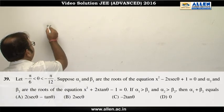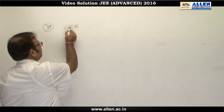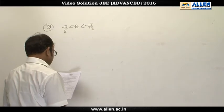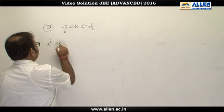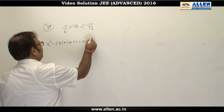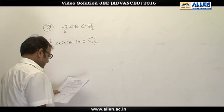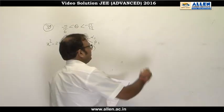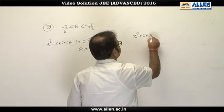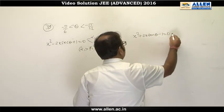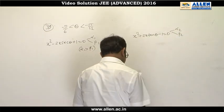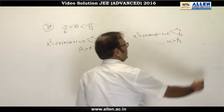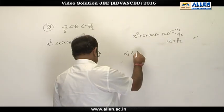Question number 39. We are given that θ is in the interval (−π/6, −π/12). There is a quadratic x² − 2x·sec θ + 1 = 0 having roots α₁ and β₁ with α₁ > β₁. There is another quadratic x² + 2x·tan θ − 1 = 0 with roots α₂ and β₂ where α₂ > β₂. We are asked to find the value of α₁ + β₂.